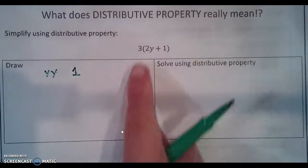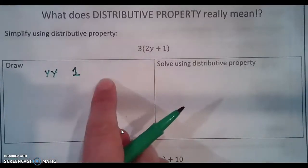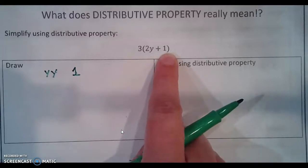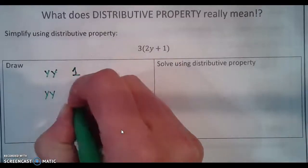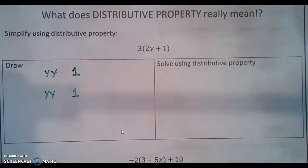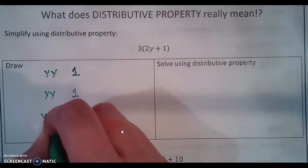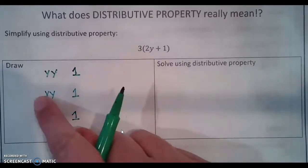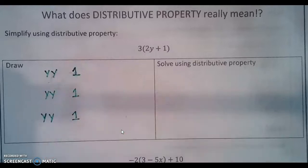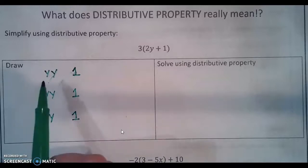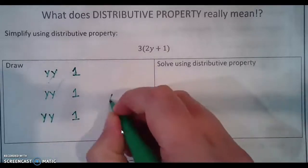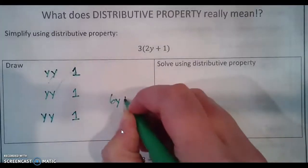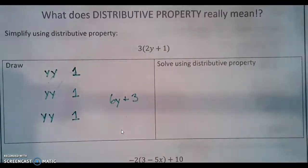But this is telling me that I don't just have this one time, I have it three times. So this as a picture. And so if you put it all together you'll notice you end up with one two three four five six y plus one two three.